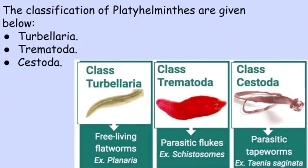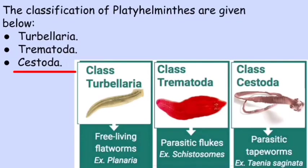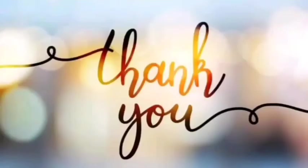The classification of Platyhelminthes includes three classes: Turbellaria, Trematoda, and Cestoda. Class Turbellaria — example: planaria. Class Trematoda — example: fluke. Class Cestoda — example: tapeworm.